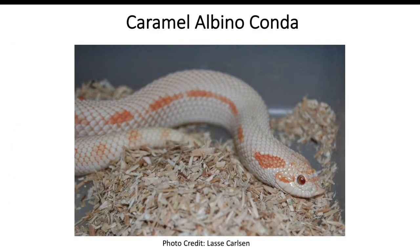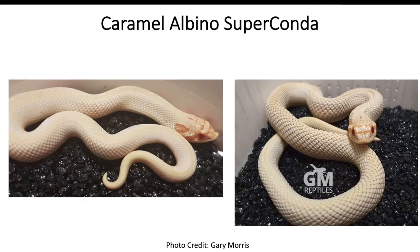Now we can combine the caramel albino with the conda gene, which reduces the pattern. This is a caramel albino conda, and if we take it one step further we're going to completely reduce the pattern with the caramel albino superconda.